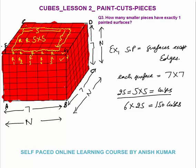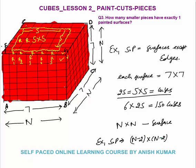To summarize: surfaces except edges, actual surface dimension 7×7, removing edges gives 5×5 = 25 cubes per surface, times 6 surfaces = 150 cubes with exactly one surface painted. For the generalized case with an N×N×N cube: each surface is N×N; removing edges reduces each dimension by 2, giving (N−2)×(N−2) per surface. With 6 surfaces, the answer is 6(N−2)² cubes with exactly one surface painted.